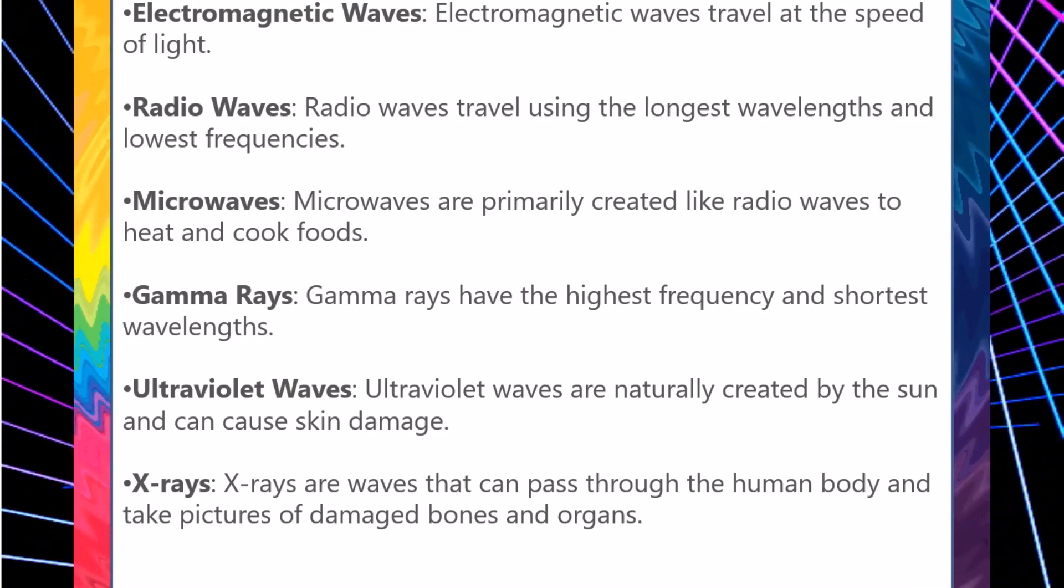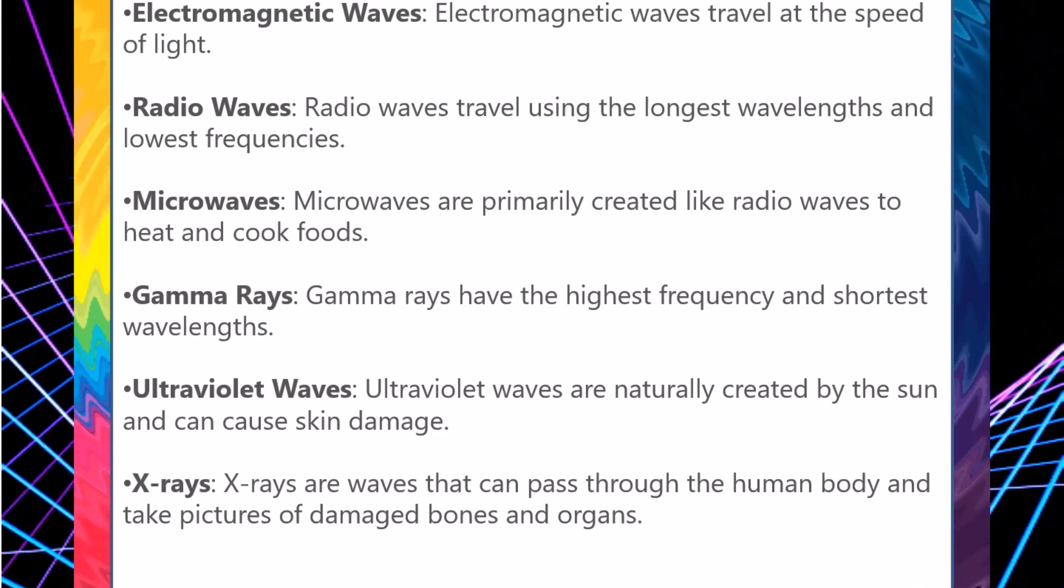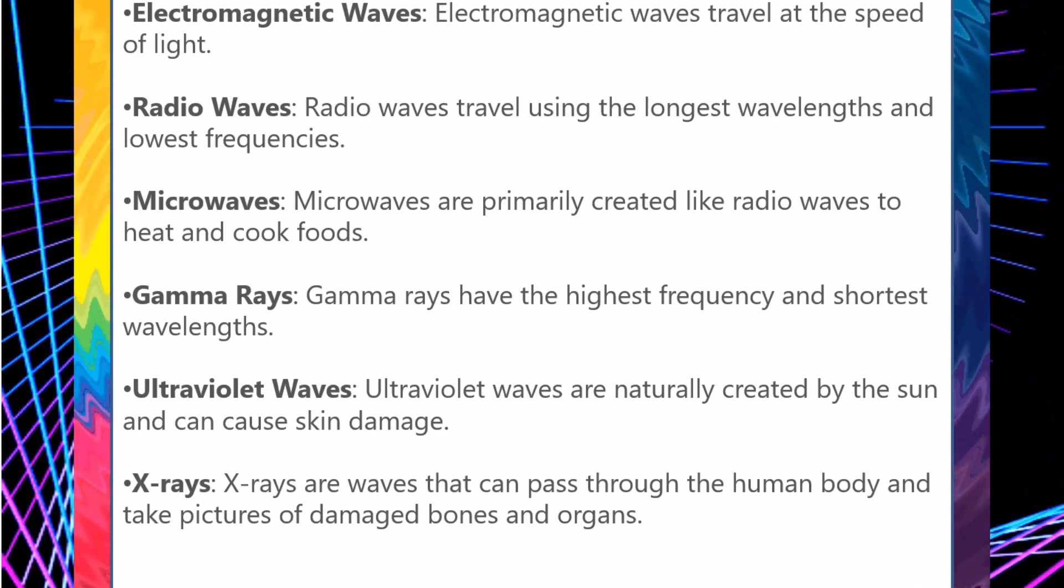Microwaves. Microwaves are primarily created like radio waves to heat and cook foods. Gamma rays. Gamma rays have the highest frequency and shortest wavelengths.